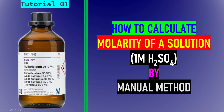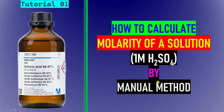Dear friends, this is my tutorial 01. In this tutorial I am going to teach you how to calculate molarity of your solution by manual method. These calculations may be very useful for experimental chemists, biologists, material chemists, and other experimental people. I am going to teach you how to make 1M H₂SO₄ and also 0.04M H₂SO₄ by manual method. This is very easy and simple — just follow my tutorials.